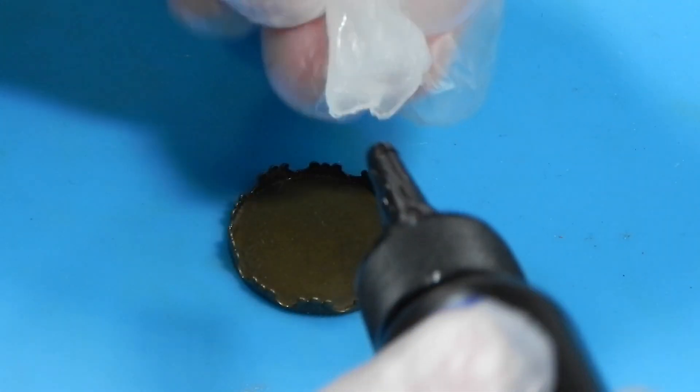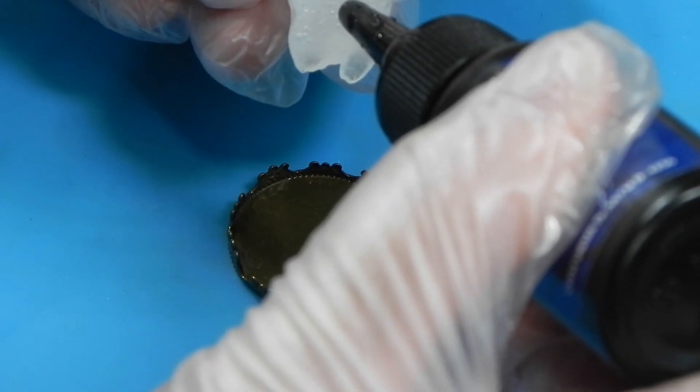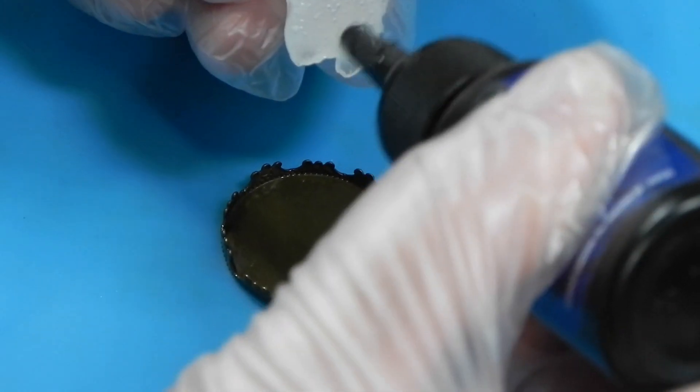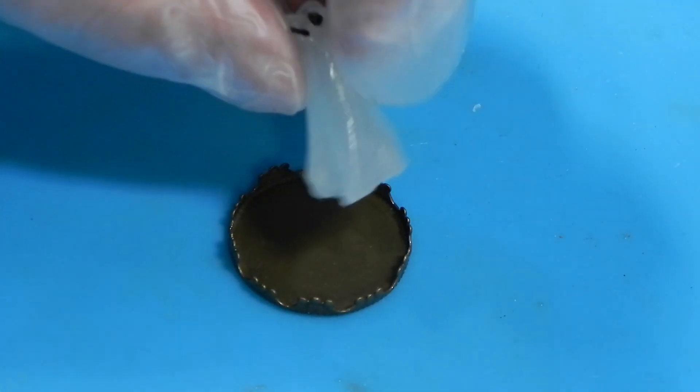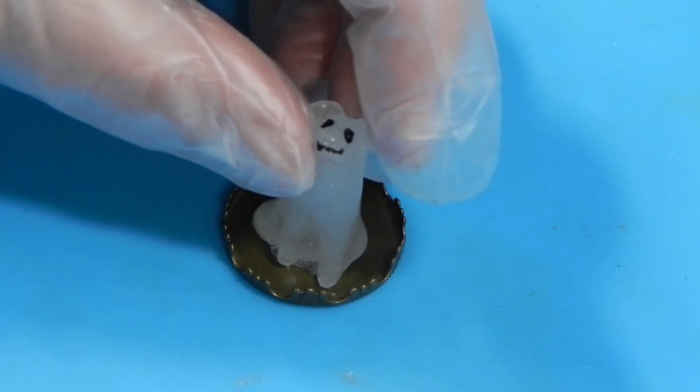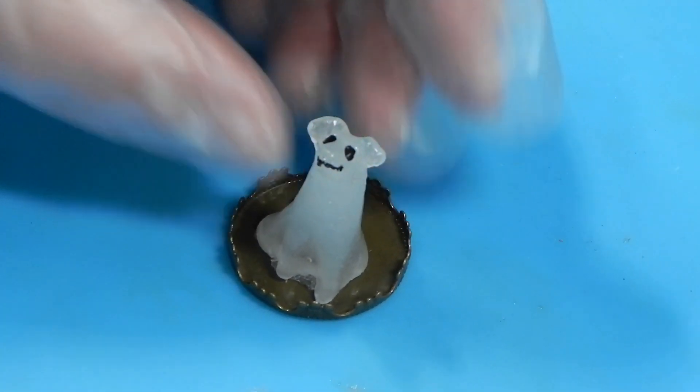And now that it's all done, using a little bit of bonding UV resin, we're going to bond him to the actual plate. Again, 120 seconds will do the trick.